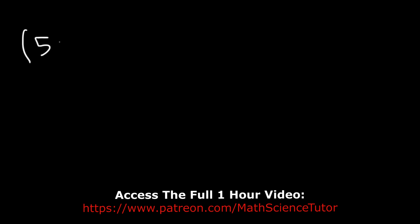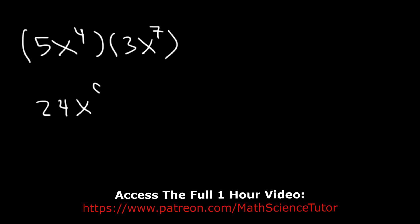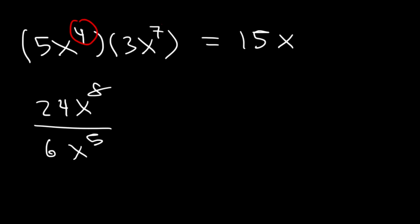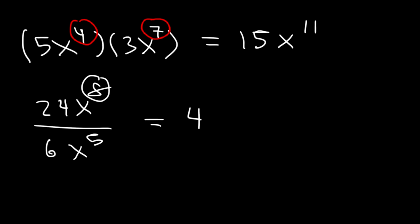Go ahead and work on these examples: 5x to the fourth times 3x to the seventh, and 24x to the eighth divided by 6x to the fifth. For the first: 5 times 3 is 15, and x to the fourth times x to the seventh means we add 4 plus 7, which is 11 — so 15x to the eleventh. For the second: 24 divided by 6 is 4, and x to the eighth divided by x to the fifth means we subtract 8 minus 5, which is 3 — so 4x cubed.